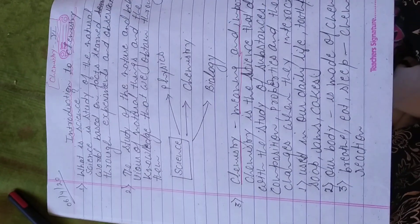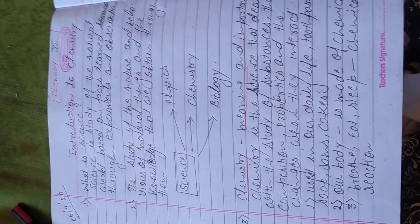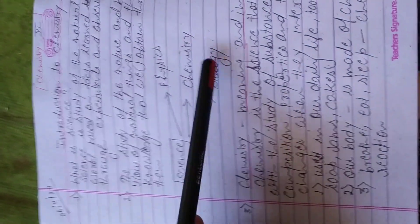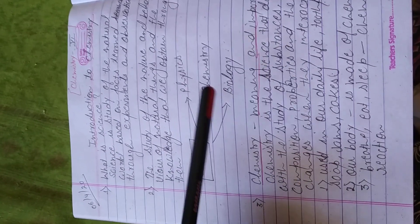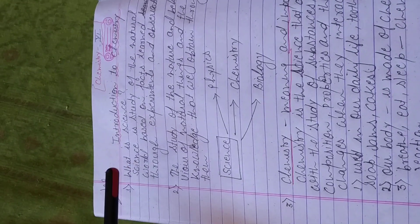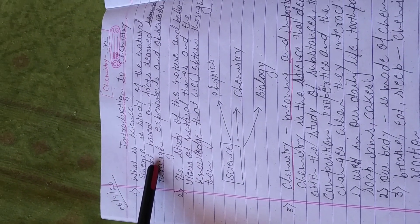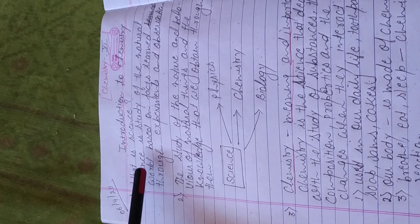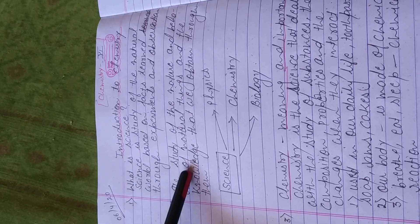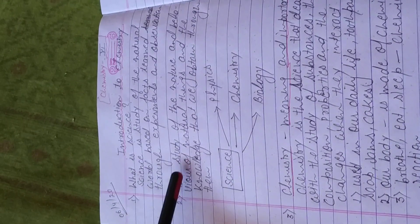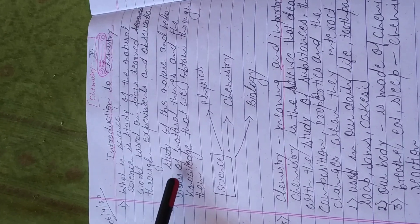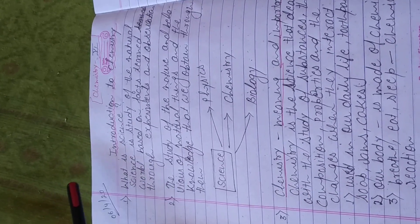The science we are learning from class 1 will, in class 6, be categorized into three different parts. But first, before we move ahead, let's discuss what is science. I'll be giving you two definitions — you can see them on the screen. Whichever is easier, you can write it in your notebook.